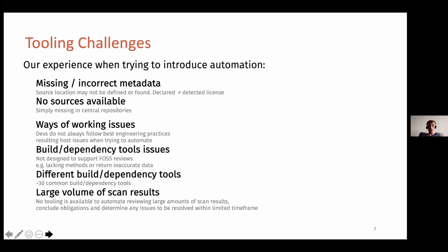It's not a surprise because SBOMs are relatively new for most people in the world. You need a lot more information to produce a high quality SBOM that you can actually automate your policy on. So it's not just about generating it — step two is making sure the data is accurate and traceable. Some tooling challenges we saw: missing data, missing sources, ways-of-working issues where the build tool recommends a particular way of working and developers do something completely different, dependency tool issues, a large number of build tools — my organization uses about 30 different dependency tools — and you have to handle a massive amount of scan results.